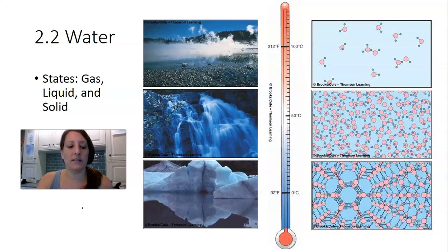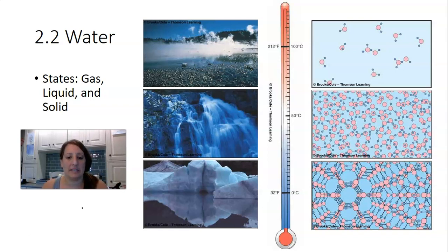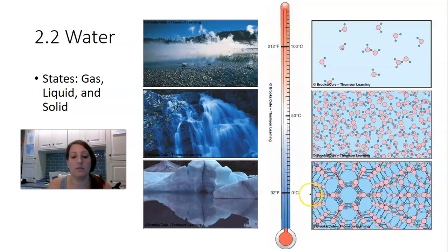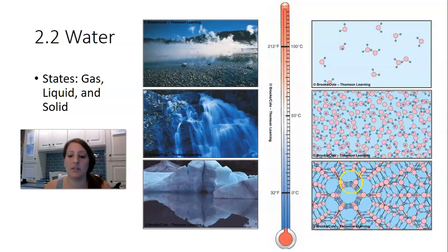Water is going to exist in different states: as a gas, a liquid, or a solid. When you look at the three states and examine hydrogen bonding and the space between the molecules, it becomes really important. At zero degrees Celsius, or 32 degrees Fahrenheit, water will freeze. In ice, the red spheres are oxygens and the little blue spheres are hydrogens, and between the molecules, those lines represent hydrogen bonding.